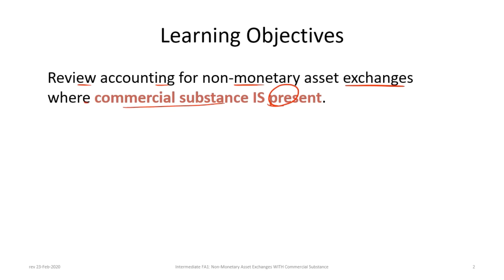Recall that commercial substance is a situation where, after the exchange, the economic position of the company is significantly altered, usually determined by the cash flows associated with the asset. For example, exchanging a red truck for a blue truck won't result in commercial substance because the trucks are presumed to have the same cash flows. However, exchanging a truck for a plane results in significantly different cash flows, and thus commercial substance exists.